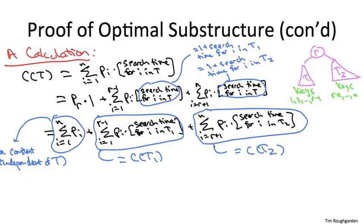So we did this computation with the purportedly optimal search tree capital T in mind. But if you think about it, you look at this algebra, this applies to any search tree you like. For any search tree, the weighted search cost can be expressed as the sum of the pi's plus the weighted search cost of the left subtree of the root, plus the weighted search cost of the right subtree of the root.